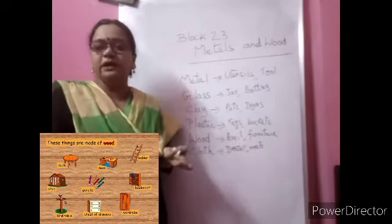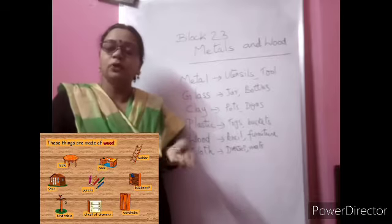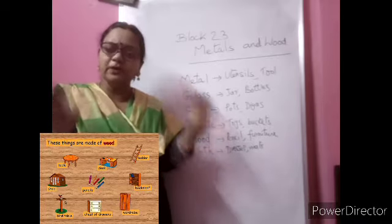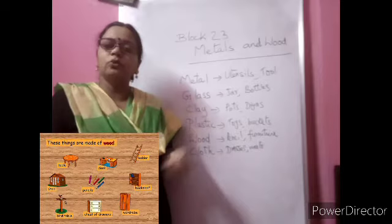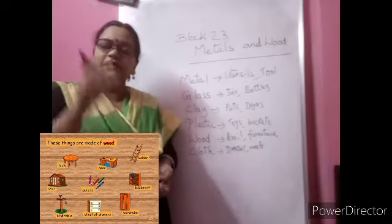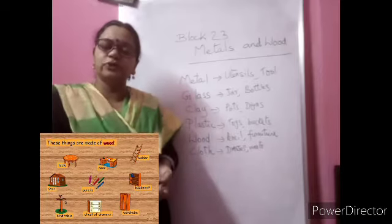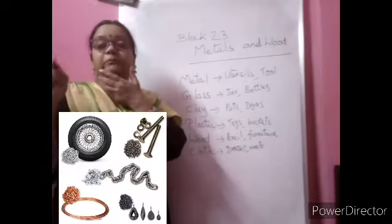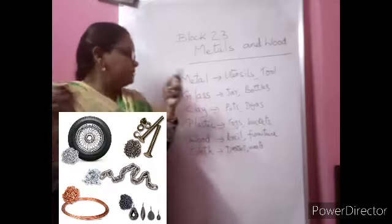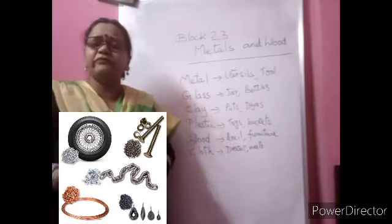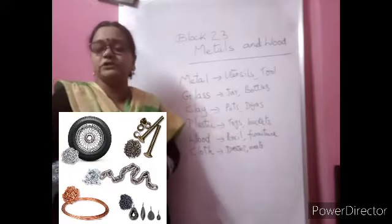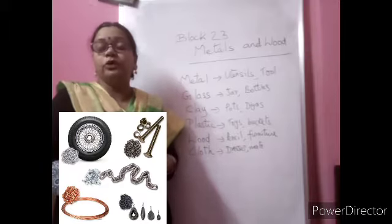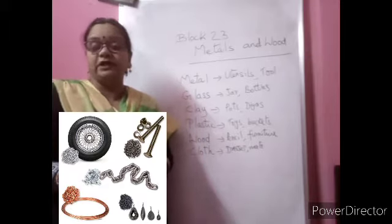You can make a list of 10 to 12 things surrounding you where you are sitting, and identify what type of material each is made up of. You can keep adding different types of materials so that you will know about many different materials.